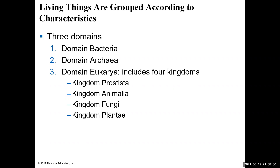Eukaryotes are much more complex at the cellular level — they are larger, have organelles, and have a nucleus. Prokaryotes, in contrast, are single-celled, much smaller, and less complex. They don't have membrane-bound organelles and don't have a nucleus containing DNA. So you have three domains: bacteria and archaea as single-celled prokaryotes, and then the domain eukarya with eukaryotic cells. The domain eukarya is broken down into four subgroups known as kingdoms: the protista kingdom, the animal kingdom, the fungi kingdom, and the plant kingdom.